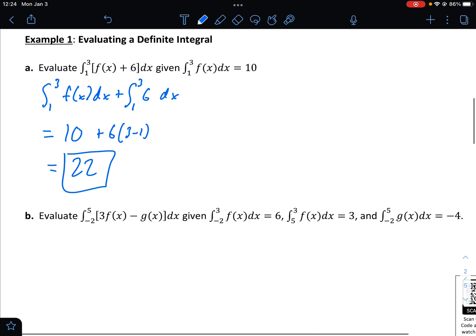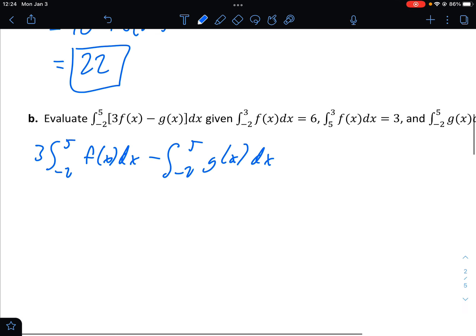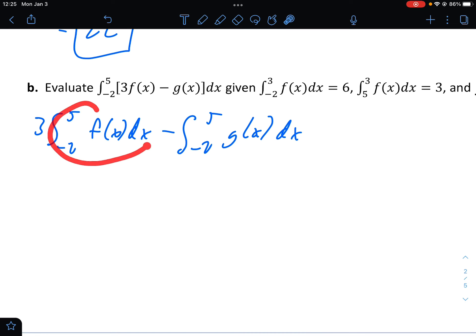For this next one, evaluate the integral from negative 2 to 5 of 3f of x minus g of x dx, given a bunch of this stuff that we know. So first of all, we can rewrite this using a couple different properties as 3 integral from negative 2 to 5 of f of x dx minus integral from negative 2 to 5 of g of x dx.